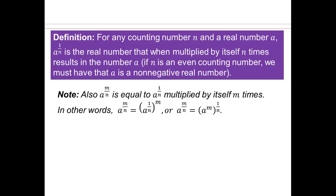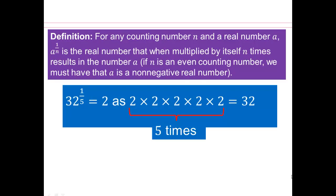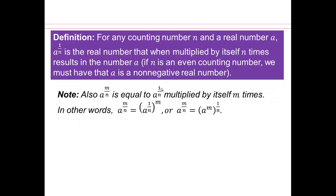So, for example, 32 to the power 1 fifth. We're saying 32 to the power 1 fifth is that number, so that when you take that number and multiply it by itself 5 times, you get 32. And we already saw that that number was 2, because 2 times 2 times 2 5 times gives you 32. So 32 to the power 1 fifth is defined as 2, so a is 32.